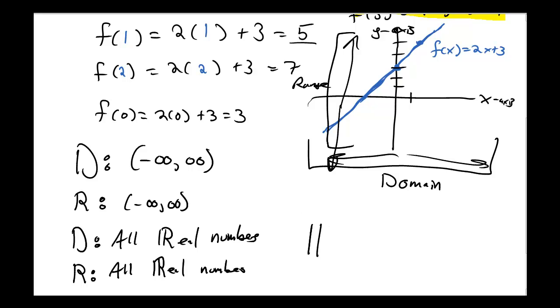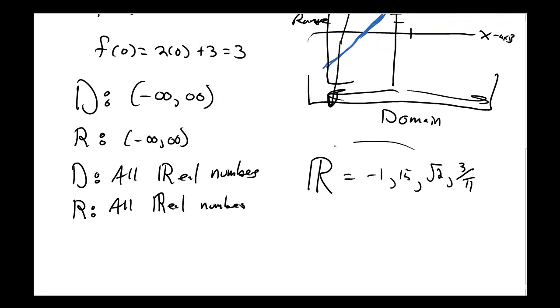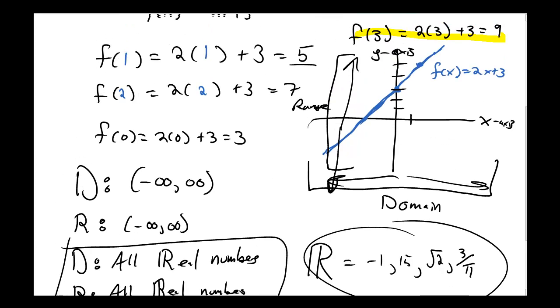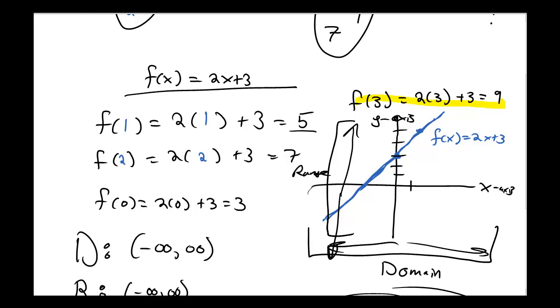Another way I say this is that my domain is all real numbers and my range is all real numbers. And I use this bolded R to mean real numbers. Real numbers don't just include things like minus 1 and 15. They include things like square root of 2 and 3 over pi. All of these more interesting numbers here are all part of the real numbers. And so that would be my domain and my range for the function f of x equals 2x plus 3.